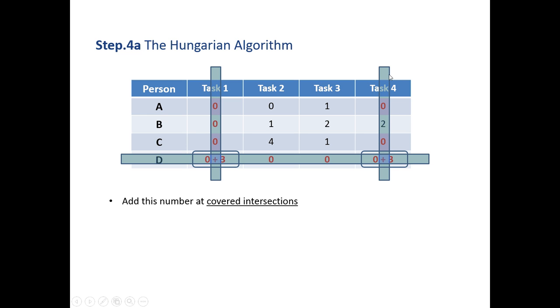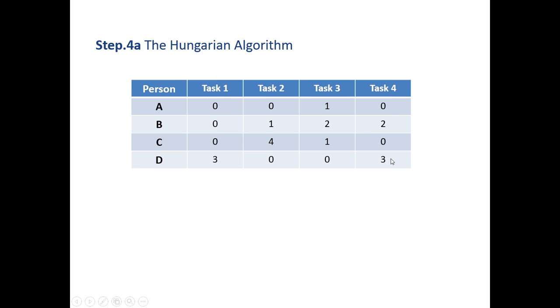We add that minimum number, which is 3, here. And here is the second intersection between task 4 and person D. They intersect here. So to 0 we add that minimum number of 3 again. That's the Hungarian algorithm completed.